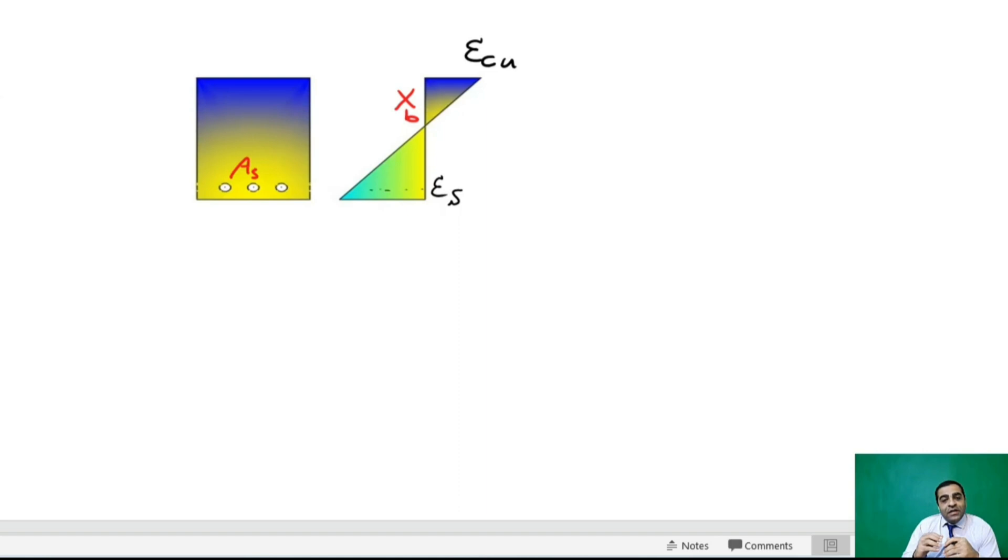A balanced position is where the longitudinal bars can achieve their capacity. I'm going to find the depth of neutral axis in this position, which we call balanced depth. As you can see in this tutorial, we have...